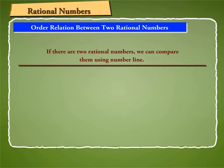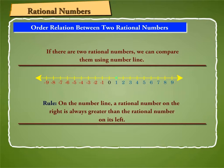Similarly, if there are two rational numbers, we can compare them using number line. As we know that on the number line, a rational number on the right is always greater than the rational number on its left.